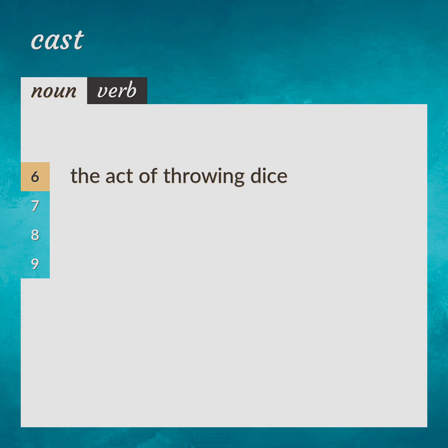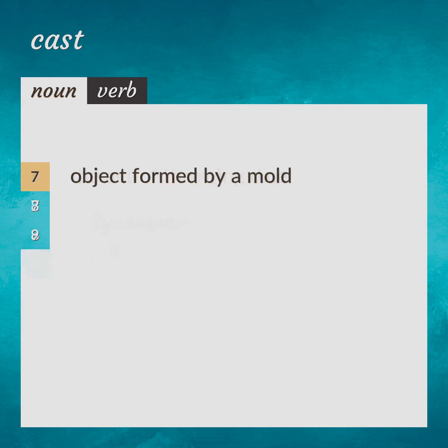The act of throwing dice. Synonym: roll. Also: an object formed by a mold. Synonym: casting.